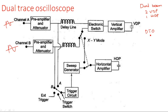In the dual trace oscilloscope, only one set of vertical deflection plates and one set of horizontal deflection plates are used — not two vertical deflection plates as in the dual beam oscilloscope. This means the same single set of vertical deflection plates is sufficient to display both waveforms from Channel A and Channel B. Let us see how it is possible for a single set of vertical deflection plates to display two waveforms from individual channels.